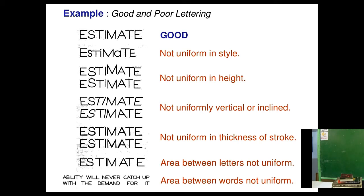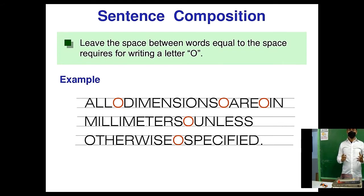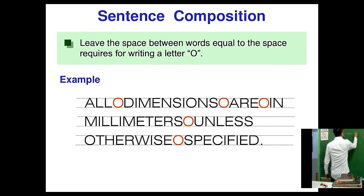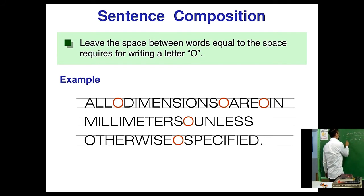Here are examples of good and poor lettering. At the top is good lettering, done freehand without any ruler. For sentence composition, leave the space between words equal to the space required for writing the letter O. That is how you estimate the distance between every word — by placing an imaginary letter O in between words.